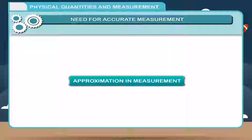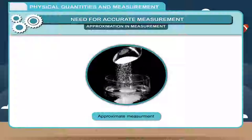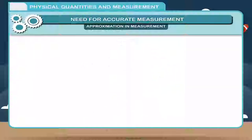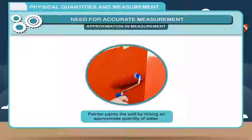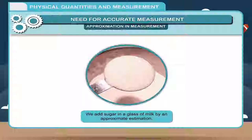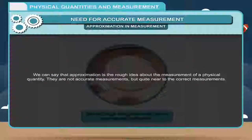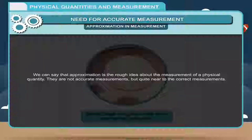Approximation in measurement: In our daily life, sometimes we need only approximate, near-to-accurate measurement. The approximate estimation is a quicker judgment about any measurement. Examples: 1. We add salt in vegetables by a quick judgment or approximation. 2. A painter paints the wall by mixing an approximate quantity of water. 3. We add sugar in a glass of milk by an approximate estimation. Hence, approximation is the rough idea about the measurement of a physical quantity — not accurate but quite near to the correct measurements.